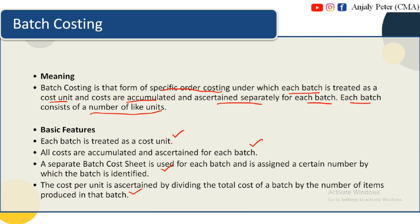In batch costing, we calculate the total cost of the batch divided by the number of items that batch will produce. That is, we calculate the total cost of the batch divided by the number of units that batch will produce to get the cost per unit.